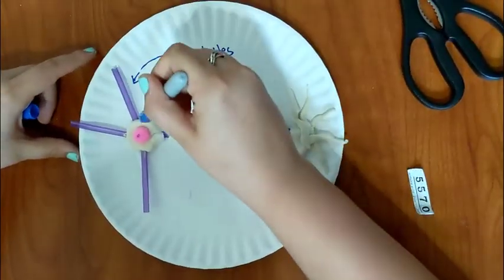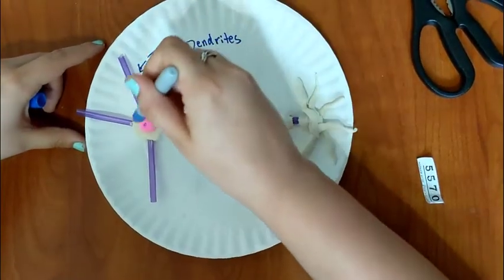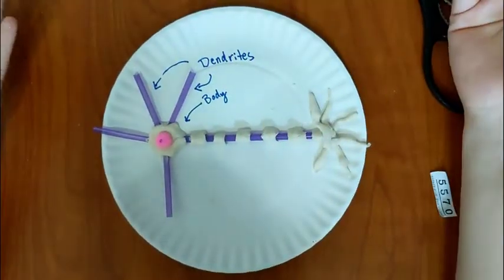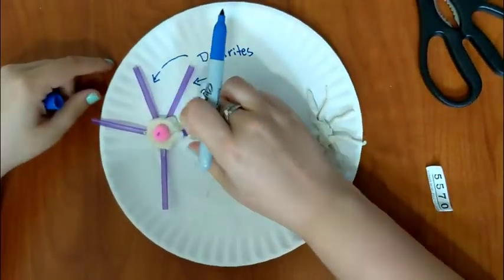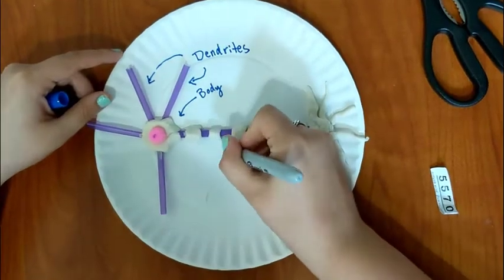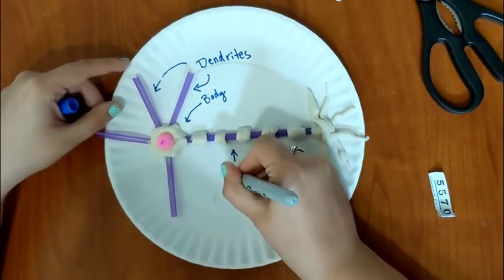These dendrites receive signals from other cells and bring them into the body where then the nucleus tells the cell what to do with those signals. And then it sends its own signal down the axon. So this is the axon.